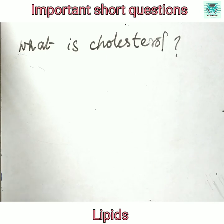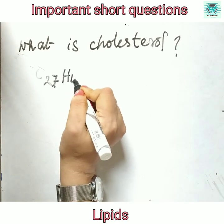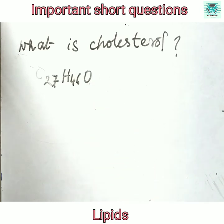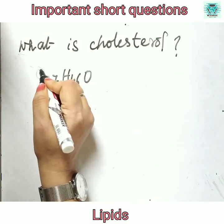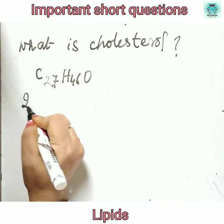The first question is: what is cholesterol? It is a derived lipid and an alcohol having empirical formula C27H46O.